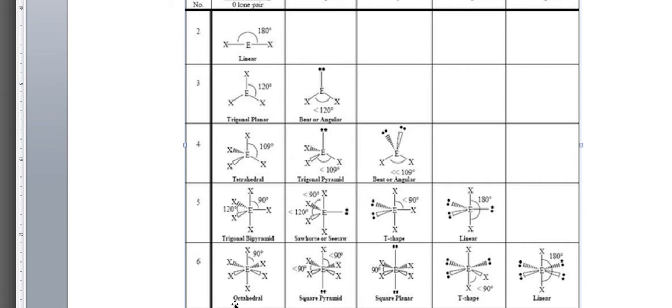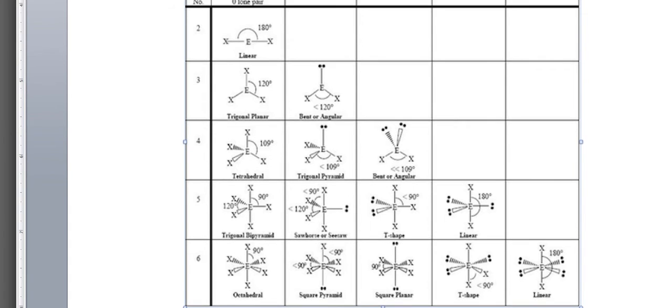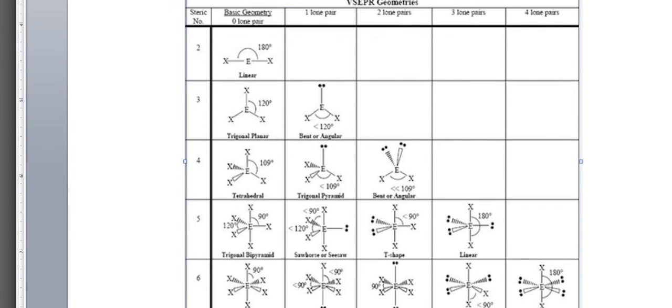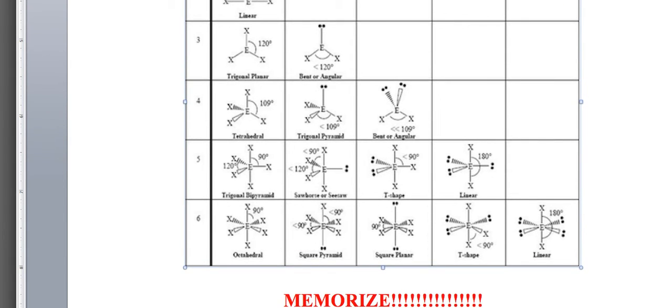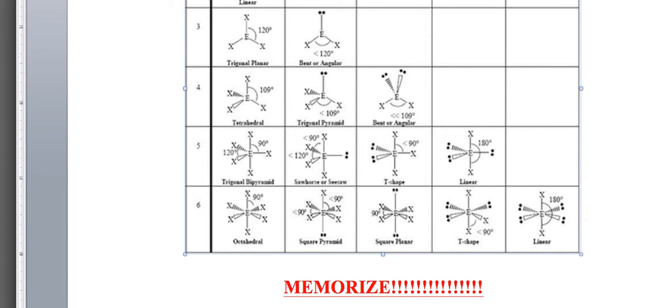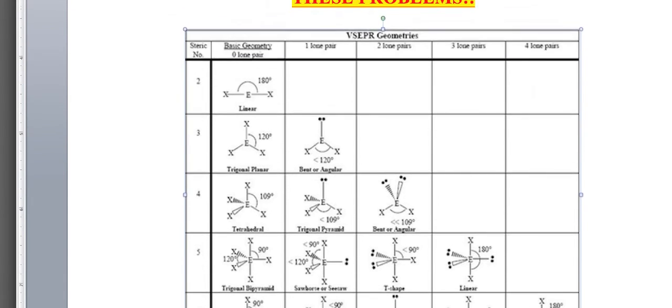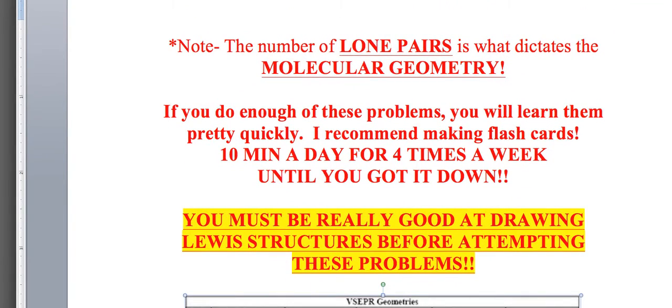Hopefully you've understood now the difference between what a molecular and electron geometry is. You're going to need to be able to draw a Lewis structure easily so that you can get to this step of drawing the molecular geometry. I recommend you make some note cards, start memorizing these. If you do ten minutes a day for four times a week, you should have it in a week or two tops. If you're doing problems while doing these note cards, it shouldn't take you more than a week.